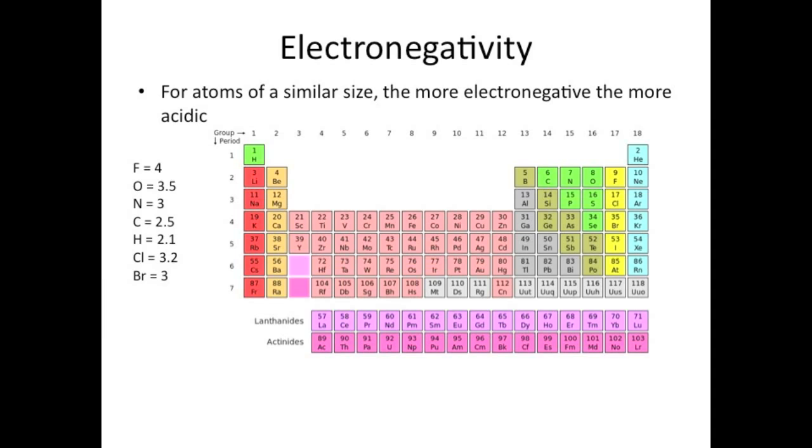These are approximate. Definitely know fluorine is the highest at 4, and that electronegativity decreases from there, both down and to the left on the periodic table. If you don't remember anything else, just remember that.